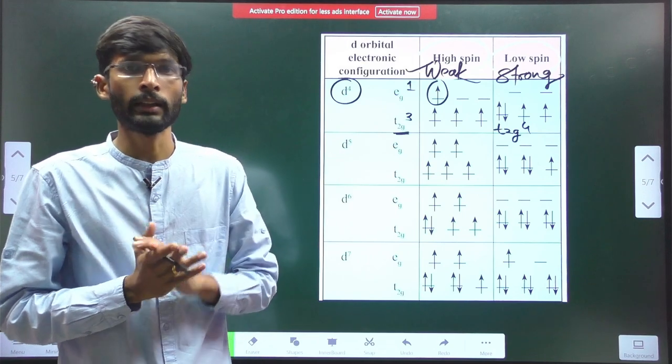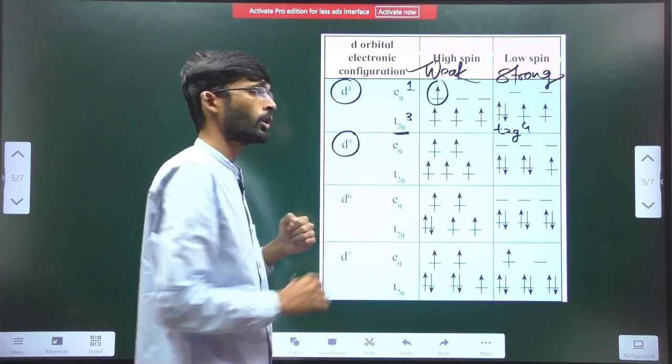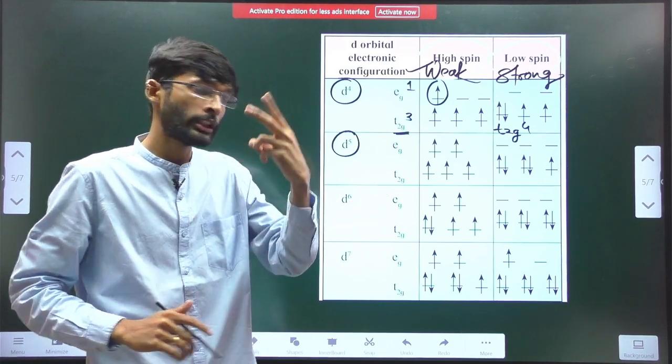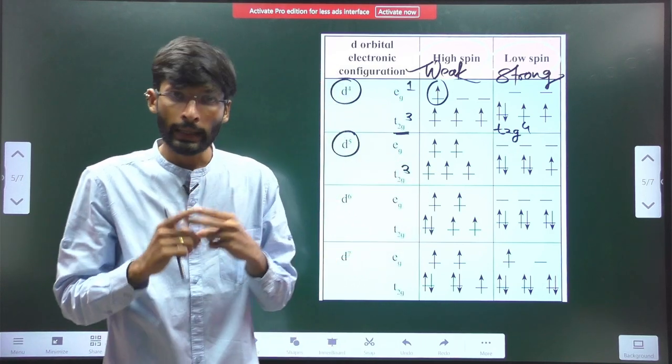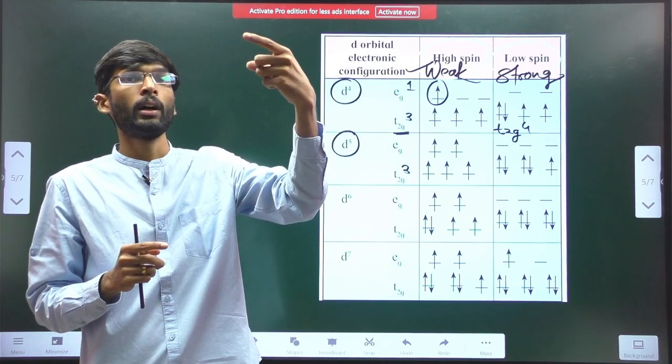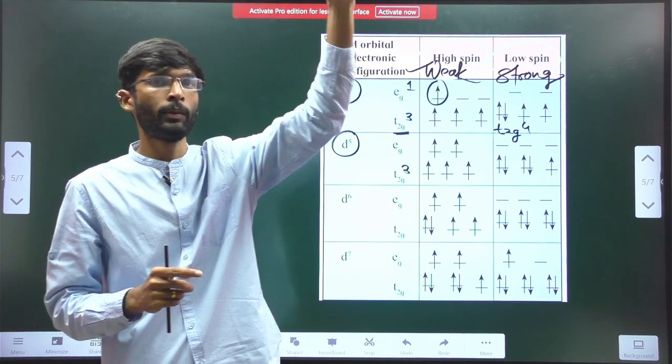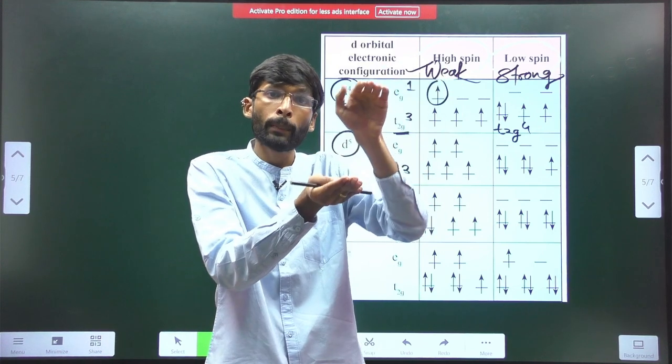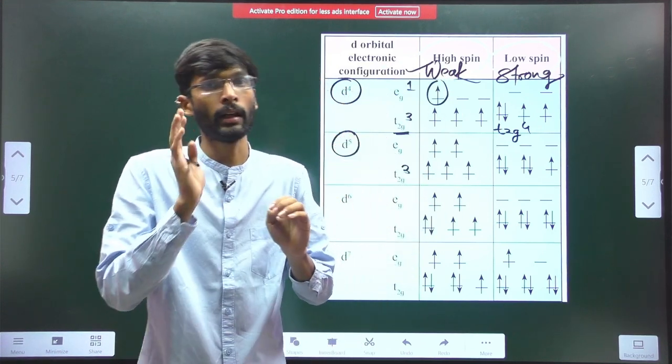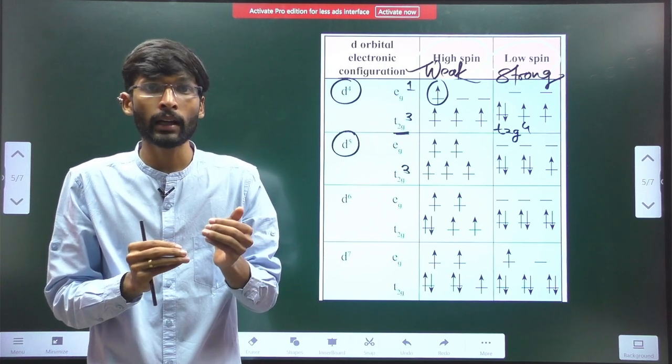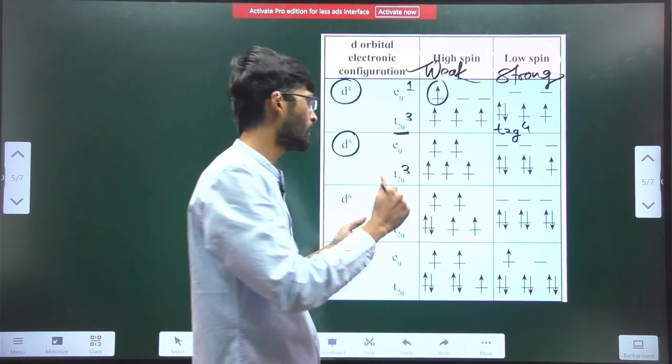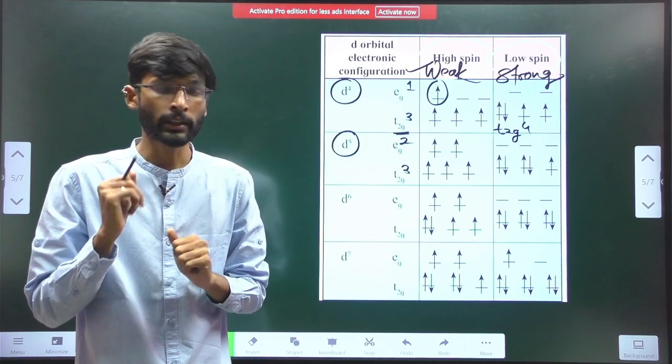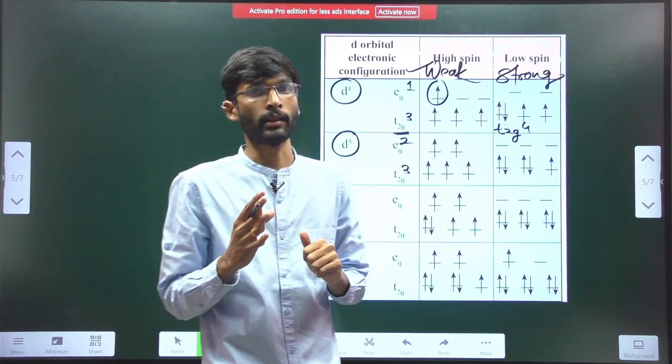The weak field ligand is also called high spin, whereas strong field ligand is called low spin. When we have d4 configuration with weak field, electrons will enter in eg. So configuration becomes t2g3 eg1. But with strong field, because gap is more, electron will prefer to stay in t2g. So configuration becomes t2g4.